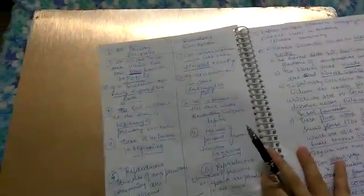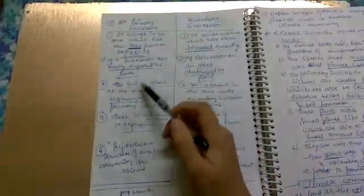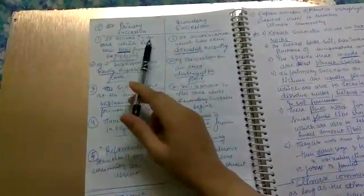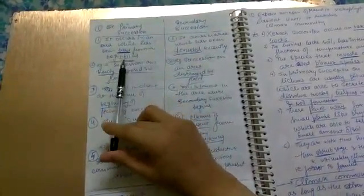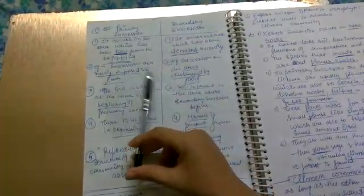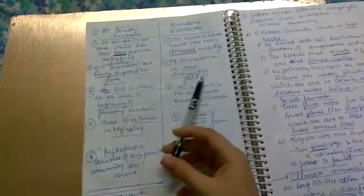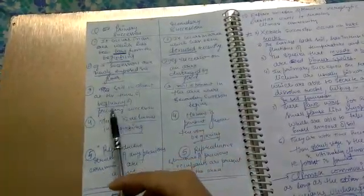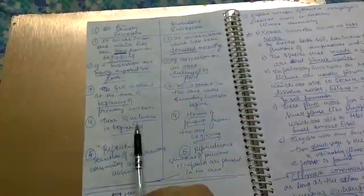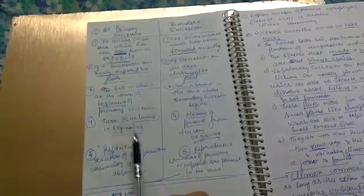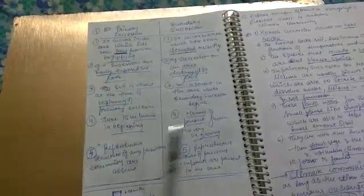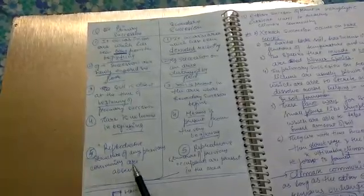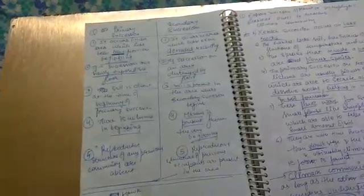Primary versus secondary succession: the difference. Primary occurs in areas which have been bare from the beginning, secondary in areas which have been denuded recently. Example: succession on newly exposed seafloor versus succession on area destroyed by flood. Soil is absent at the beginning in primary, soil was present at the beginning in secondary. Humus was not present in primary, was present in secondary. Reproductive structures of previous community are absent in primary, they are present in secondary.